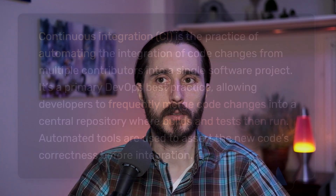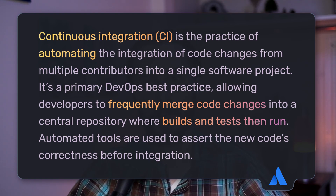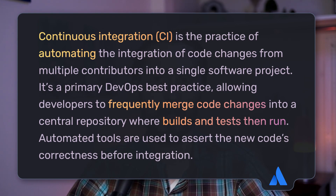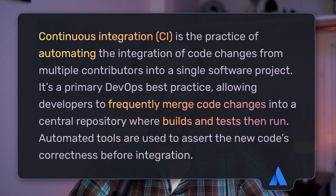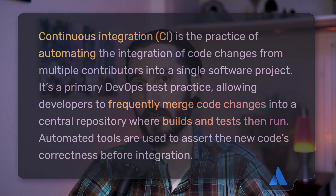Let me give you a brief definition from Atlassian here. Continuous integration is the practice of automating the integration of code changes from multiple contributors into a single software project. It's a primary DevOps best practice allowing developers to frequently merge code changes into a central repository, where builds and tests then run — automated tools are used to assert the new code's correctness before integration. I think that definition touches on the practicals of the CI process a little bit more.